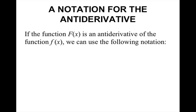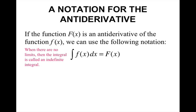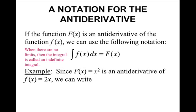Notation for the antiderivative: if the function big F is an antiderivative of the function little f, we can use the following notation. We say the integral of little f dx equals big F. When there are no limits, then the integral is called an indefinite integral. For example, since big F equals x squared, it has a derivative of 2x. So that means we can write the integral of 2x dx as equal to x squared.